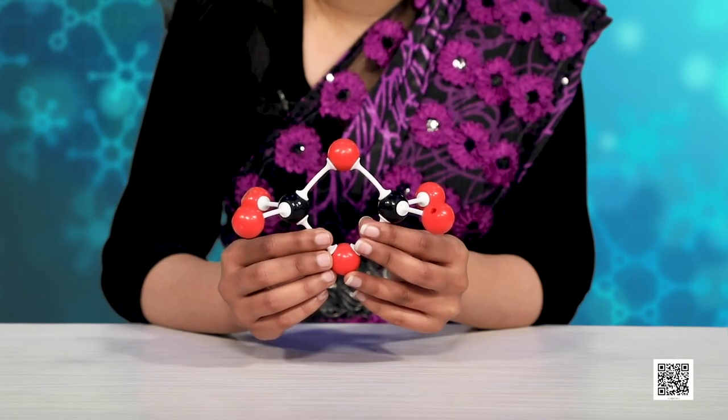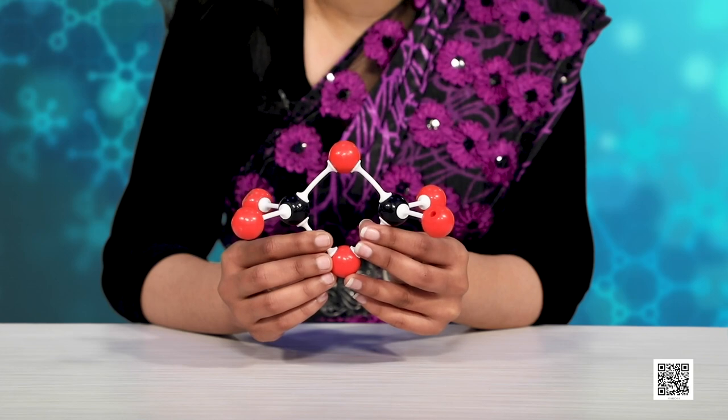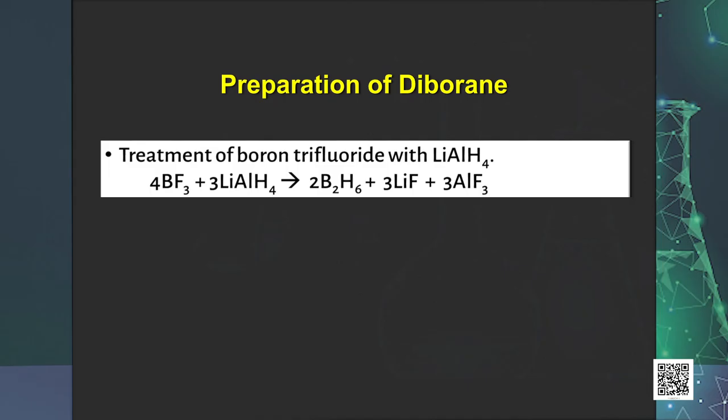These B–H–B bonds are different and can be described in terms of banana bonding. Preparation of diborane involves treatment of boron trifluoride with lithium aluminium hydride in diethyl ether: 4BF₃ + 3LiAlH₄ → 2B₂H₆ + 3LiF + 3AlF₃.